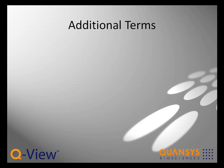A few important terms to be familiar with: QPlex Array is the brand name of the multiplexed ELISA kits manufactured by Quansys Biosciences. QView Imager is the brand name of the imager produced by Quansys Biosciences. This is one of several imagers compatible with the QView software, and the only imager specifically designed to be used as a system with QView software and QPlex arrays.